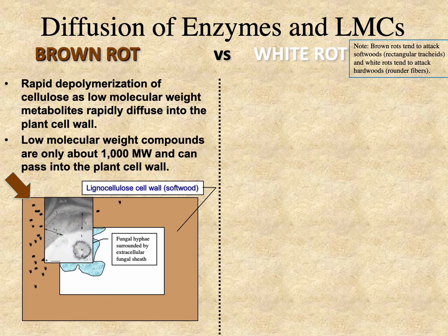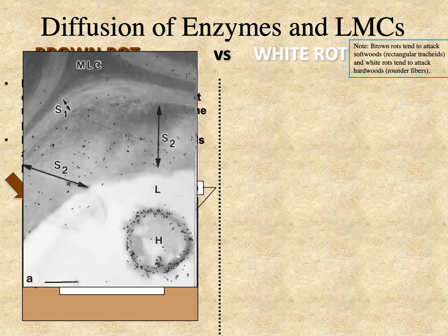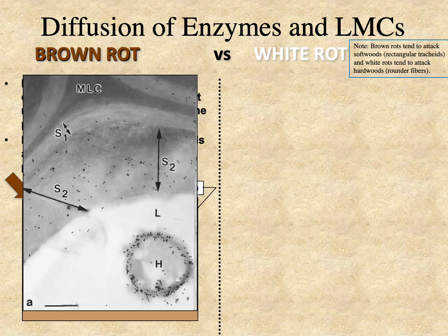These pictures show a brown rot fungus and some of the early work done with low molecular weight metabolites, visualizing the little specks that are secreted by the fungal hyphae, and then the immunolabeling work shows them in the cell wall as well.